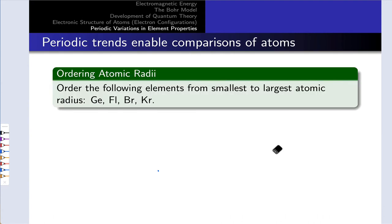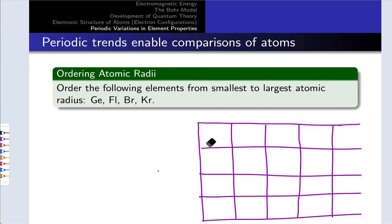Let's work a quick practice problem where we apply this idea of the trends in atomic radius. This is a common type of problem you'll see in periodic trend units. We're asked to order the following elements from smallest to largest atomic radius: germanium, fluorovium, bromine, and krypton. In working problems like this, I like to draw a picture. To draw a picture for this, I'm going to draw a chunk of the periodic table. Of course, you can also just look at a periodic table if you have that in front of you.